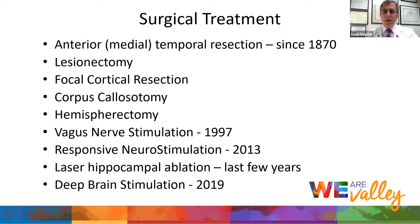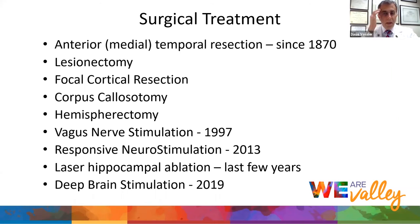Moving on to surgery — not to scare anybody, but to give some information. This is not new. Temporal lobectomies were done by Dr. Victor Horsley in London in 1870 — before any brain imaging, before EEG, which wasn't invented until the 1930s. He found that if someone had something wrong with their temporal lobe with horrible uncontrollable seizures, taking it out left them free of seizures. That's 150 years ago. It's much more advanced now, but it does work.